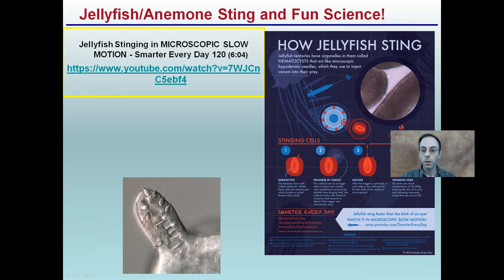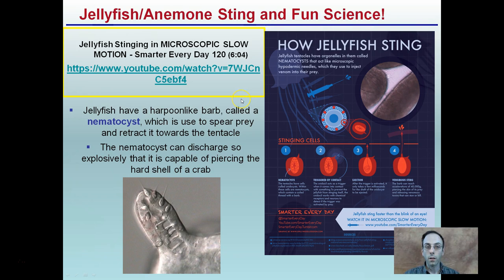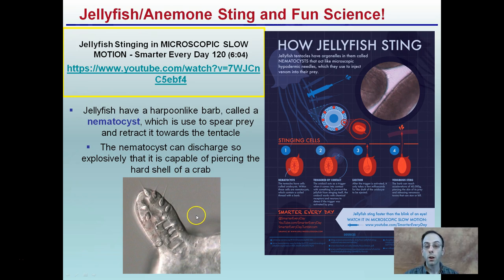There's a great video link that shows this in slow motion. Jellyfish have harpoon-like barbs — called nematocysts — which spear prey and retract towards the tentacle. These can discharge so explosively that they're capable of piercing the hard shell of a crab. The Smarter Every Day video really gets you to appreciate what's going on inside those tentacles, even if you haven't enjoyed the experience of being stung by a jellyfish.